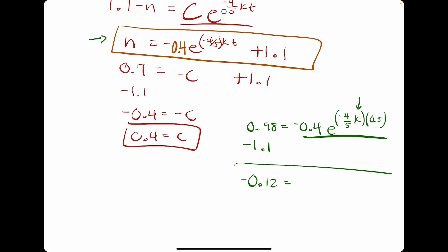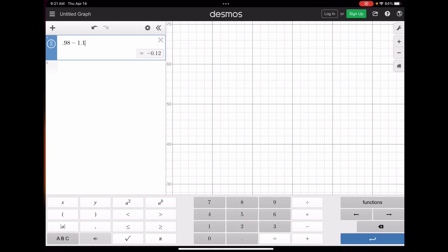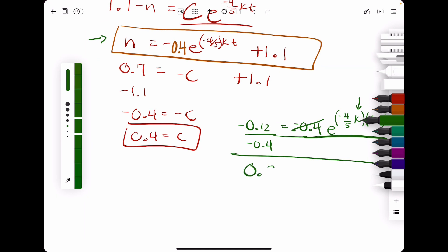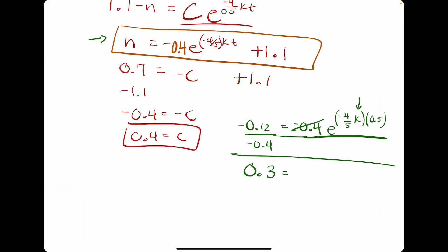0.98 minus 1.1 gives us negative 0.12 equals all this. So I'm going to just rewrite it up here. So let's divide now by negative 0.4. That'll get rid of it here. And then dividing by 0.4 here gives us 0.3. But they're both negative, so it becomes positive 0.3 equals this e term. We take the ln of both sides to eliminate the e.